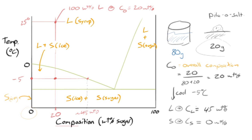Let's see if we can figure out how much of one phase and how much of another phase there is. Specifically, we'll look at the case of how much ice there is and how much liquid syrup there is in water or sugar. But once we derive the equation, we can apply it to any system, and we'll apply it a little bit later to the iron-carbon system.